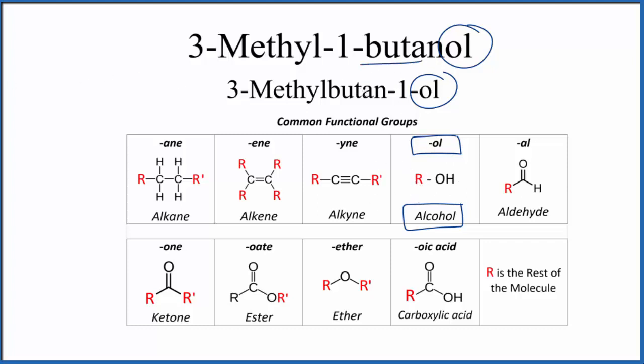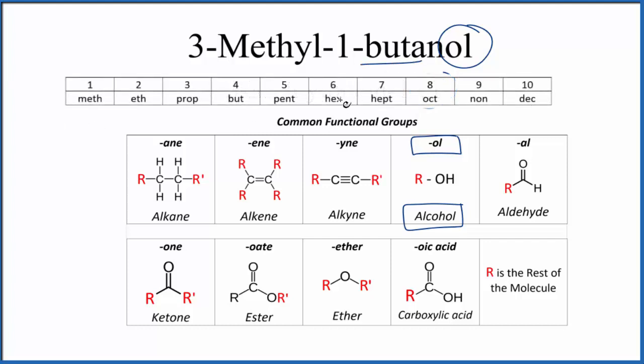The bute, bute means 4. So if you look at a list of the prefixes here, 4, that's going to be the bute. So let's put a chain of 4 carbons up, and then we'll number them.